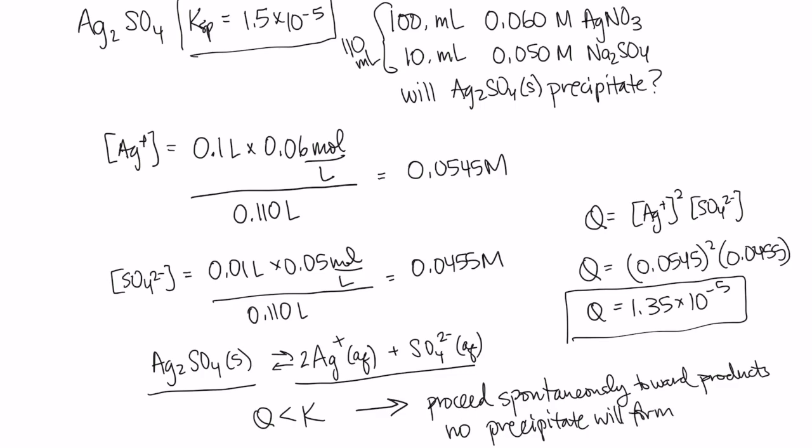If Q were greater than K, then a precipitate would form spontaneously. And if Q equaled K, it would mean we were at equilibrium and no solid would form. But if we added any extra, it would not dissolve. Okay. Thanks for listening. I hope that's helpful.